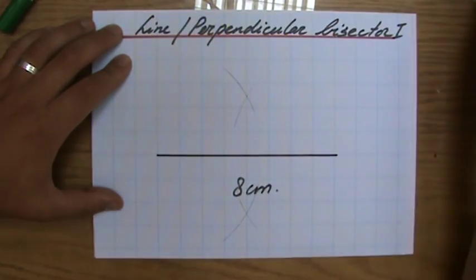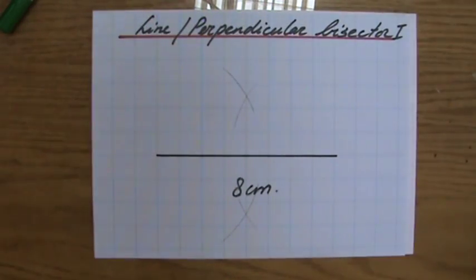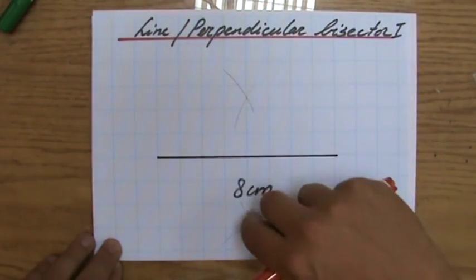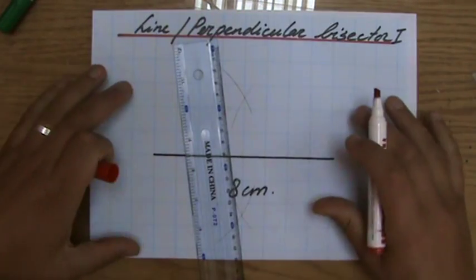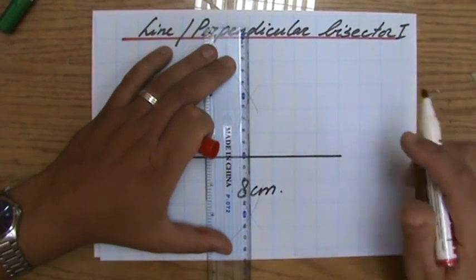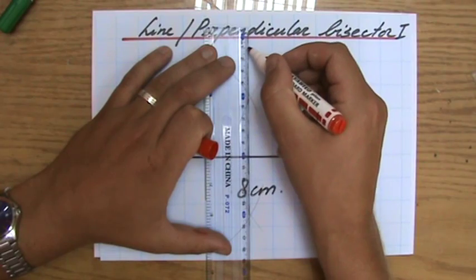Those are the construction arcs. You don't rub them out. They're part of your solution. Point of intersection there, point of intersection there. And as you can see, or maybe you can't, but trust me...